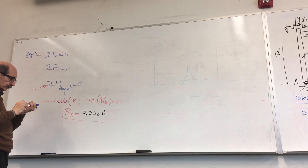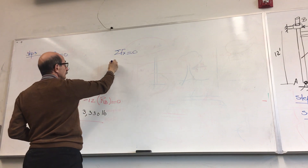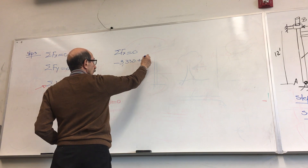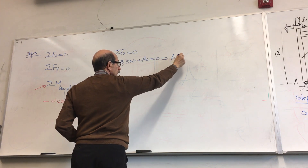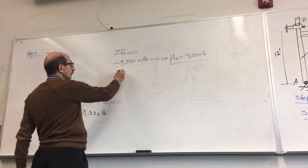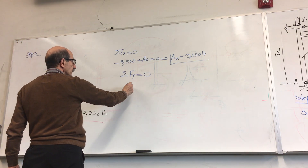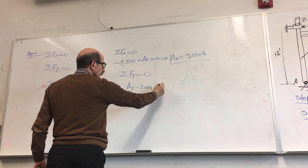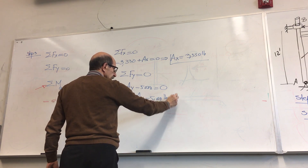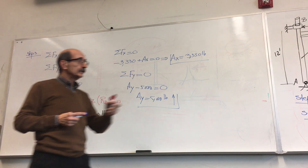Now apply the other equations. Summation of forces along X is zero: 3,330 (RB) plus Ax equals zero, so Ax is also 3,330 pounds. Summation of forces along Y is zero: Ay minus 5,000 equals zero, so Ay equals 5,000 pounds acting upward. And that's it. The last step is really the easiest — the most important step is the free body diagram.